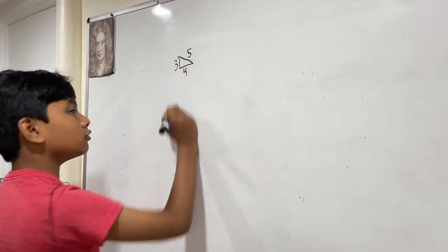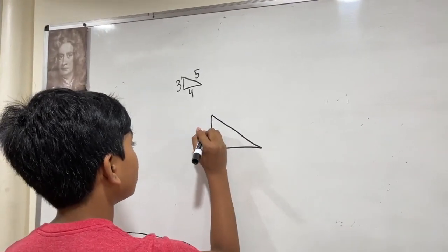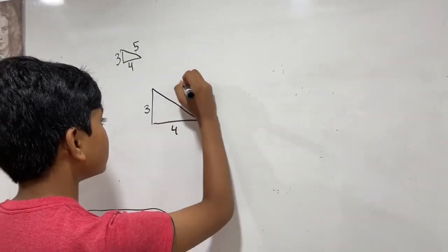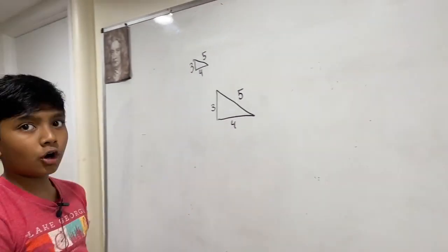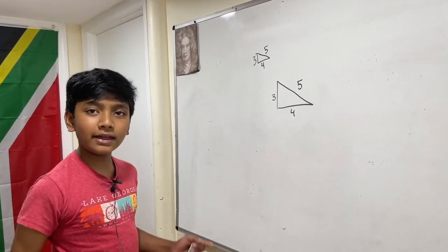If you don't know what Pythagorean triples are, they are when you have a right triangle and every single number is a whole number for the sidelines. For example, 3, 4, 5.